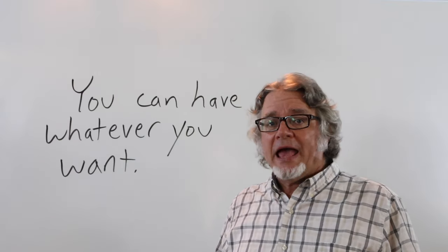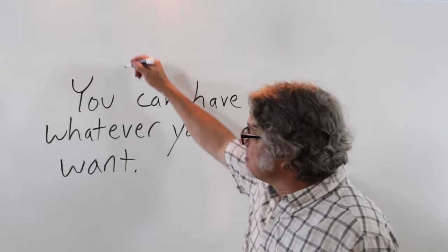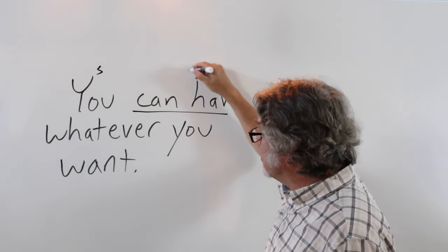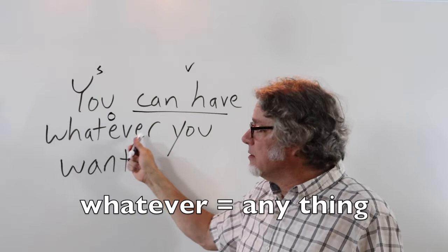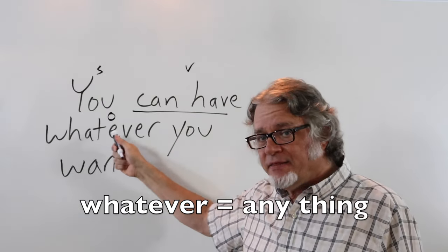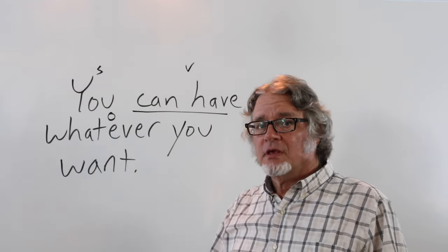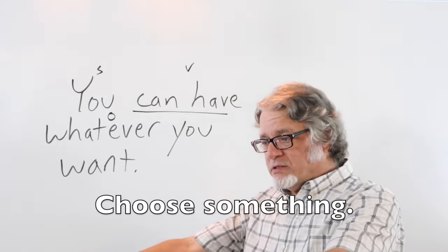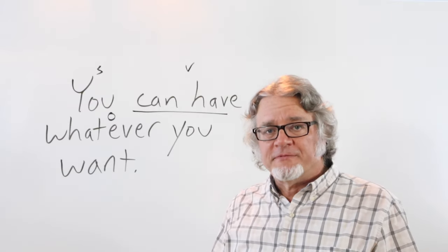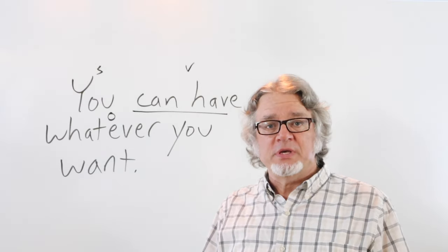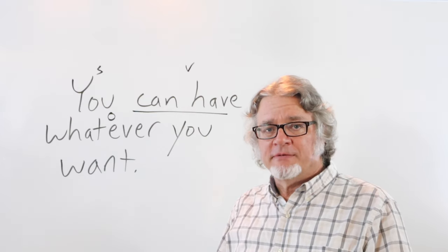You can have whatever you want. In this sentence, here's the subject, this is the verb, and this is the object. Whatever is anything. If I have a lot of things and they're over here, I can tell you to choose something. You can have whatever you want. This could be food or something that I'm giving away for free.